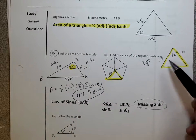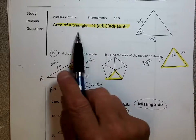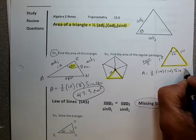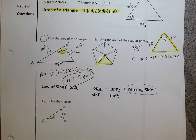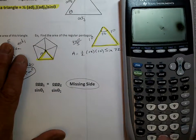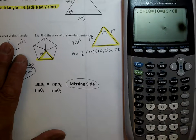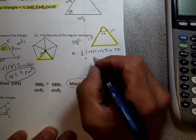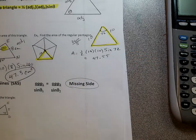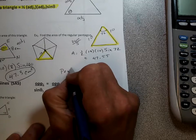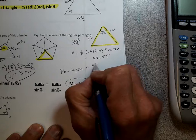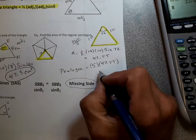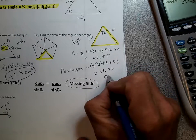So do I have adjacent, adjacent, and the angle? I do — I've got two adjacent sides and the angle. So let's use this formula: area equals one-half times 10 times 10 times the sine of 72. Using the calculator: 0.5 times 10 times 10 times the sine of 72 gives about 47.55. That's the area of one triangle. But we know there are five triangles, so for the pentagon: five times 47.55 gives an answer of 237.76 centimeters squared.